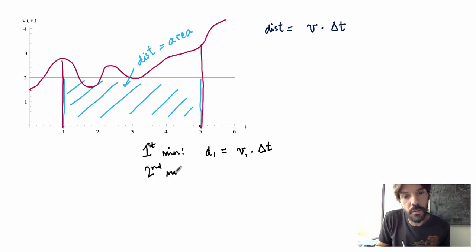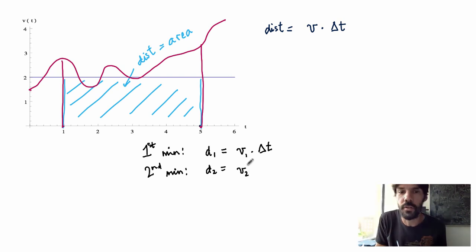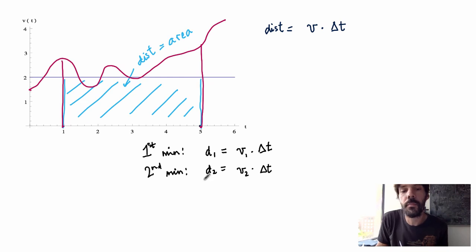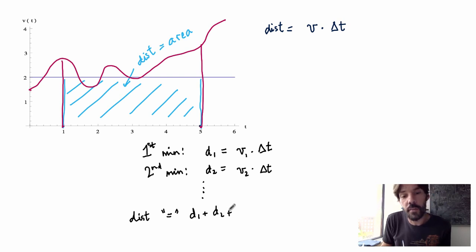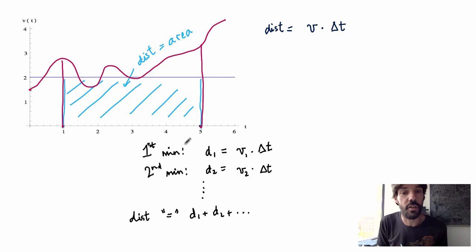I can do the same thing over the second minute. I'll get d2, which is v2 — the approximate velocity over the second minute — times the one-minute interval. V2 may be slightly different from v1, but I take it to be pretty much constant over the one-minute interval. I can keep going like that up until I reach the endpoint of my time interval. Adding up all the little distances I'm covering over each minute gives a pretty good approximation of the distance covered over the full time interval.